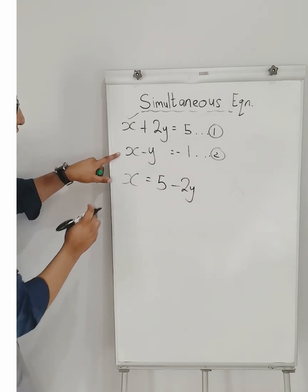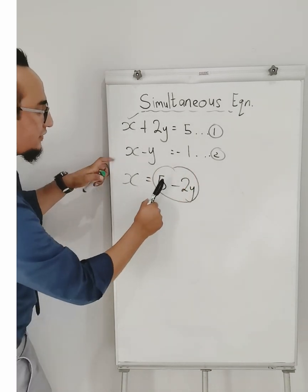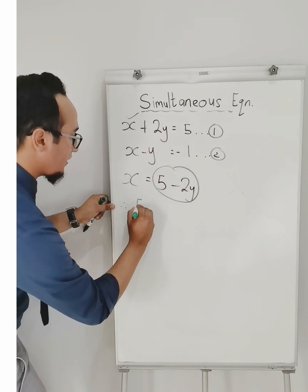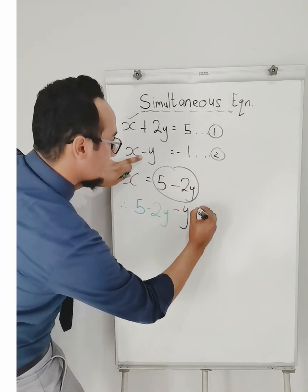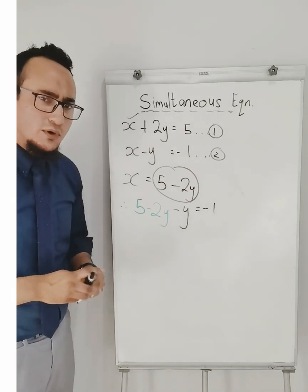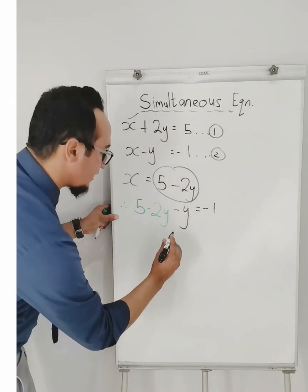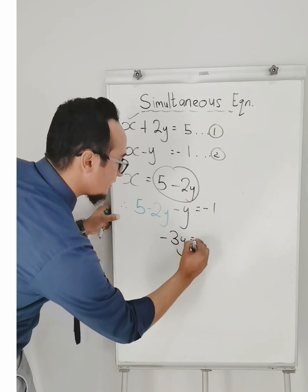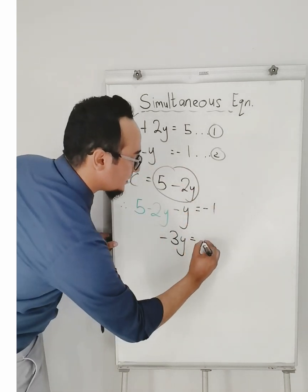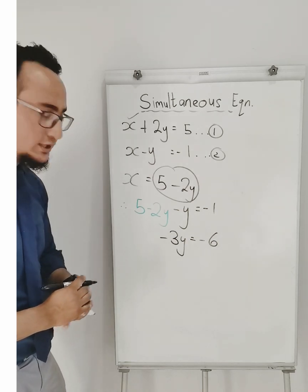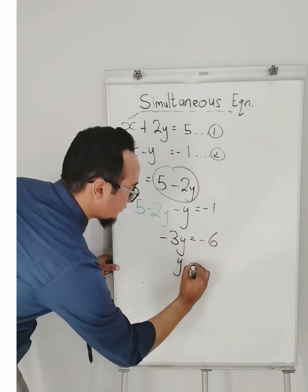Back to equation number two. So 5 minus 2y, minus 2y, is equal to negative 1, and now I solve. My unknown is my y value. So negative 2y minus y is negative 3y, and negative 1. If I take the 5 over, it's going to be negative 5, and that will be equal to negative 6. I'm solving for the value of y — divide by negative 3 on both sides, and y is therefore equal to 2.